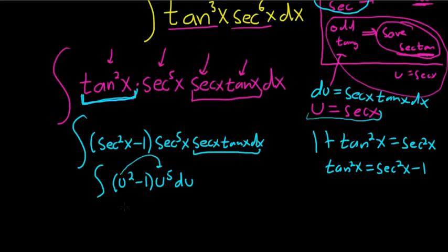So let's see, u squared times u to the 5th is going to be u to the 7th. And then u to the 5th times 1 is minus u to the 5th du. Good stuff.